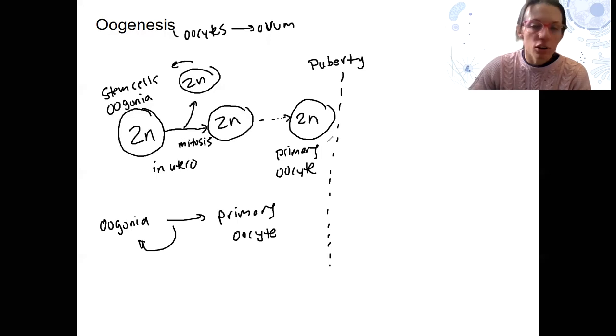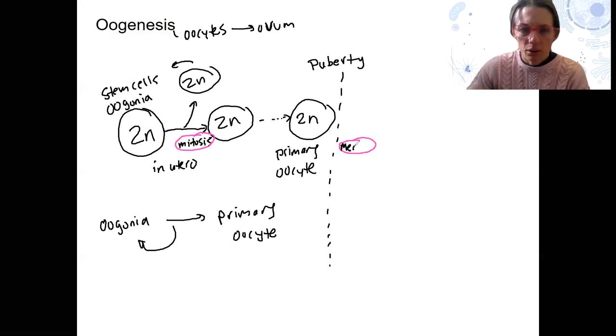At puberty, that's when these are going to go through meiosis I. I'm going to do actually different colors for these. I'm going to keep it consistent, so I'm just going to circle them. Circle my meiosis I. What does that mean? That means the cell is going to divide and become haploid.